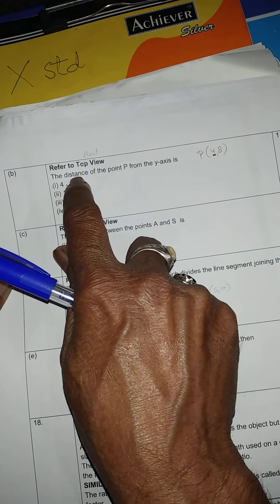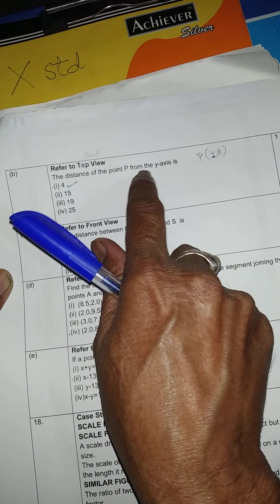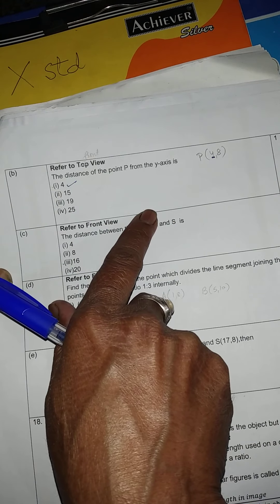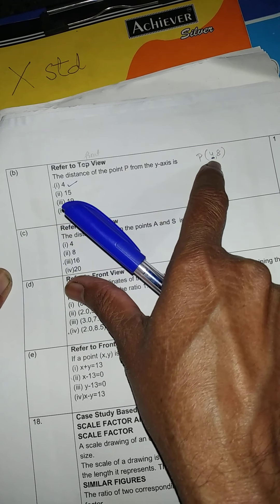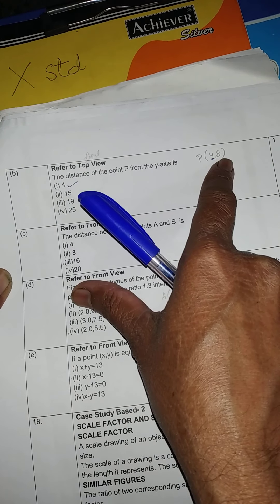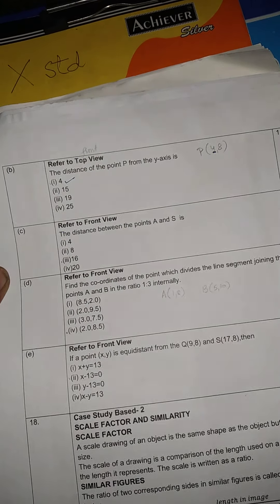Suppose they are asking what is the distance of the point from the x-axis? Then you will have to see the y coordinate. They are opposite of each other. If they are asking about y-axis, you see x coordinate. If they are asking about x-axis, you see y coordinate. It will be clear very easily.